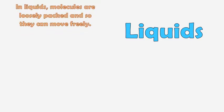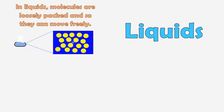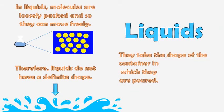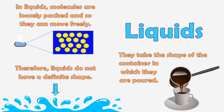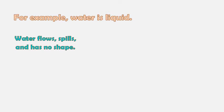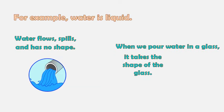In liquids, molecules are loosely packed and so they can move freely. Therefore, liquids do not have a definite shape. They take the shape of the container in which they are poured. For example, water is liquid. Water flows, spills, and has no shape. When we pour water in a glass, it takes the shape of the glass.